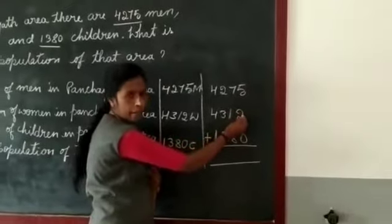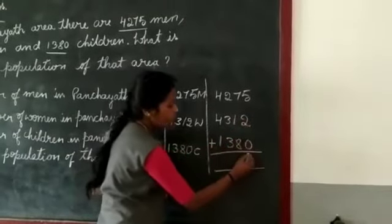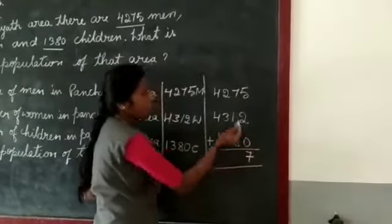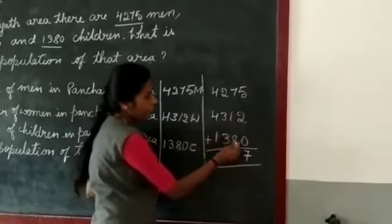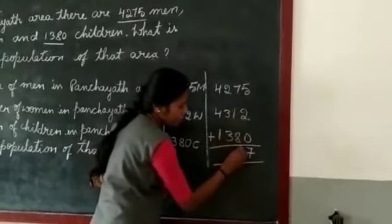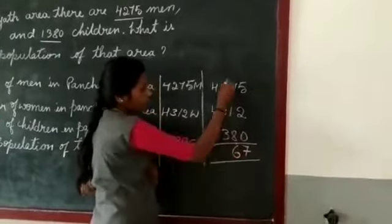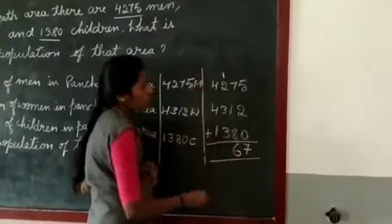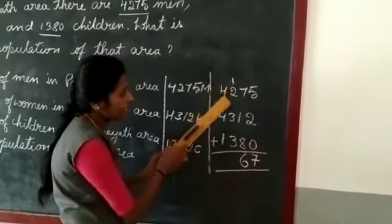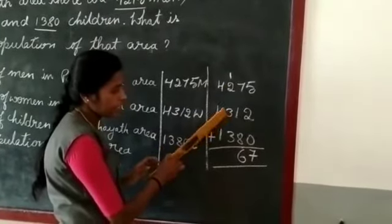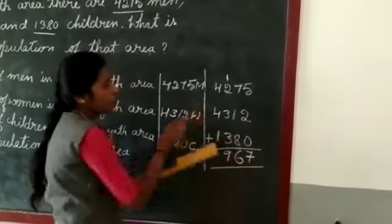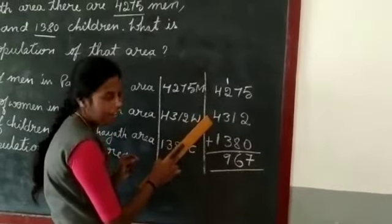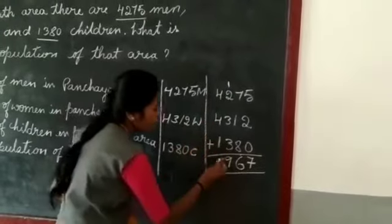5 plus 2, 7. 7 plus 0, 7. 7 plus 1, 8. 8 plus 8, 16. We have to write 6 and carry 1. 1 plus 2, 3. 3 plus 3, 6. 6 plus 3, 9. 4 plus 4, 8. 8 plus 1, 9.